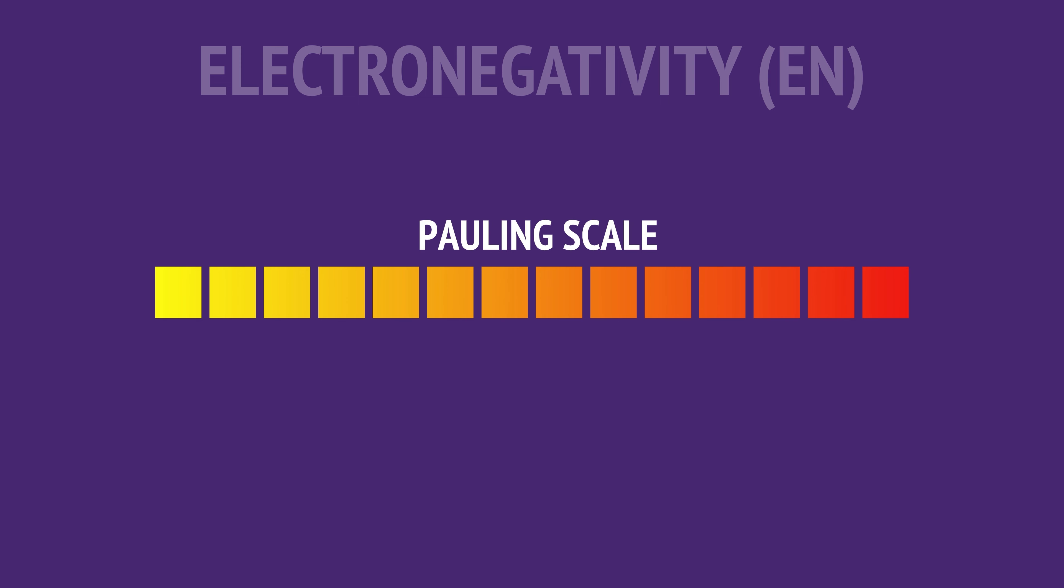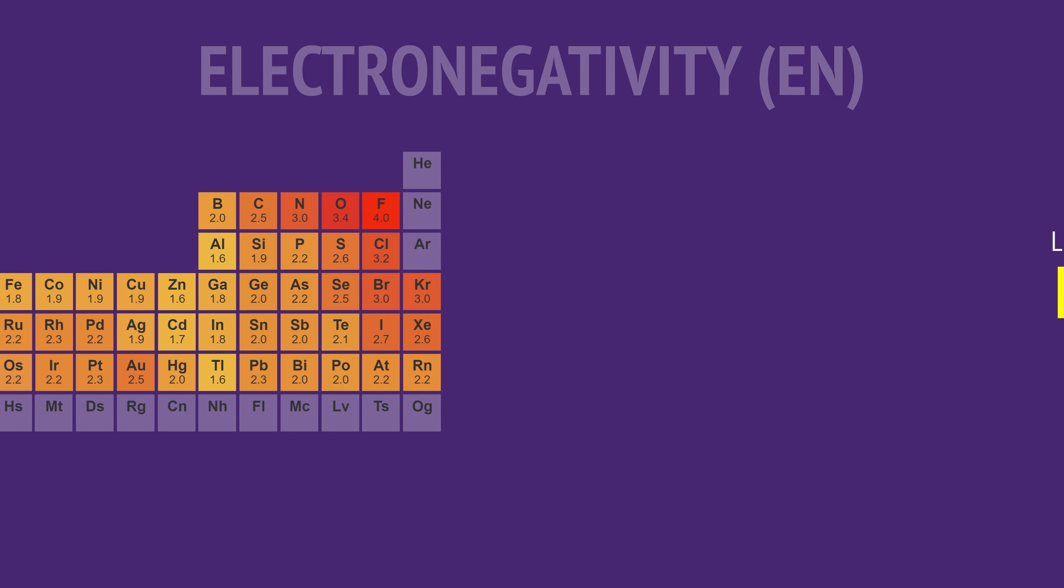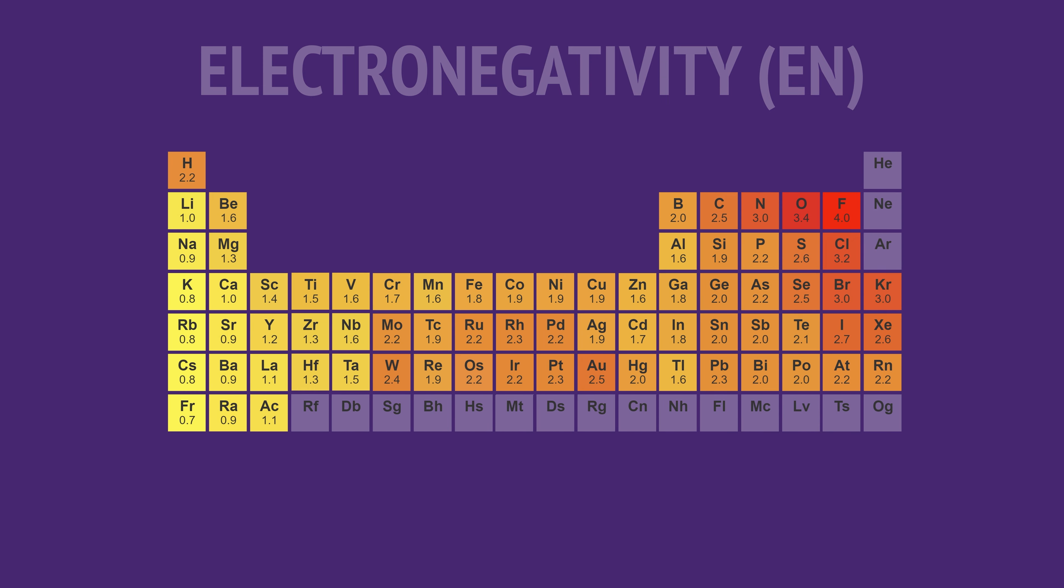The Pauling scale assigns a number to the strength of this pull. The scale ranges from 0.7 for the least electronegative atom, the one with the weakest pull, to 4.0 for the most electronegative atom, the one with the strongest pull. And with this scale we can see how electronegativity varies across the periodic table.